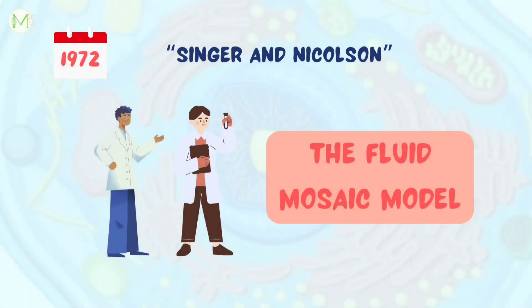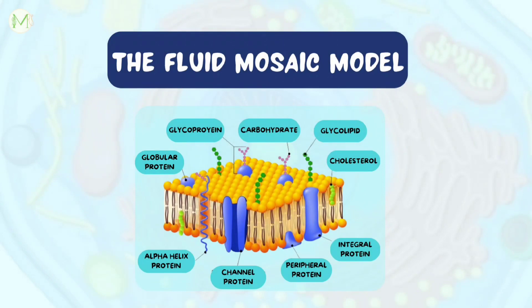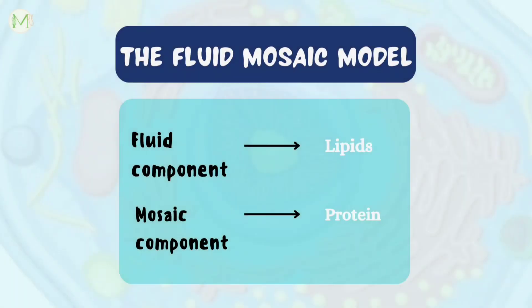In the year 1972, Singer and Nicholson explained the structure of a cell through a model called the fluid mosaic model. They said that a cell membrane consists of a double layer of lipids that contains protein molecules. The lipid bilayer permits flexibility of the cell while still maintaining structural integrity and makes it selectively permeable. In the fluid mosaic model, the fluid component of the membrane is the lipids and the mosaic component is the membrane proteins.